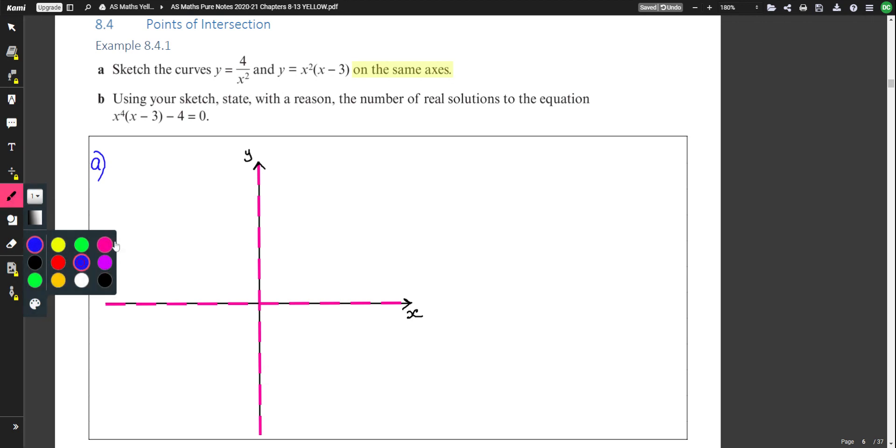Now the two graphs. Let's do 4 over x squared first. So this is of the form something positive over x squared. As we saw in the previous section 8.3, all the y values that come out of this little function are going to be positive. As x gets bigger, y gets smaller. So this is the general shape that we get.